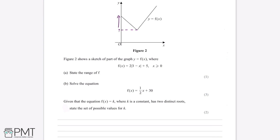We can do some rough sketches to visualize this. If we consider the graph in its first form — where y is equal to modulus of 3 minus x, without the transformations of 2 and plus 5 — the graph looked roughly like a V-shape. The important thing to note is that here it was touching the x-axis, so regardless of the x-coordinate, its y-coordinate was 0.